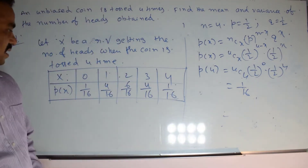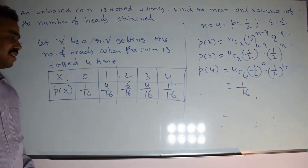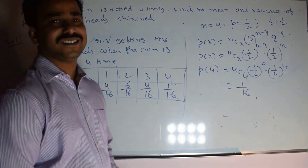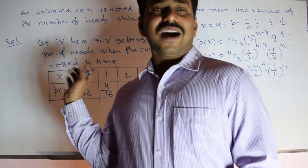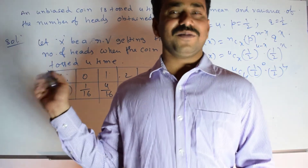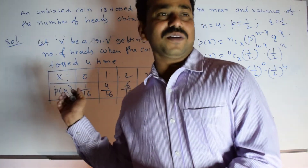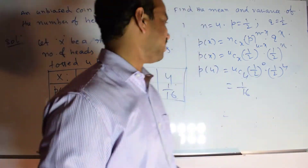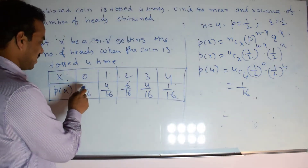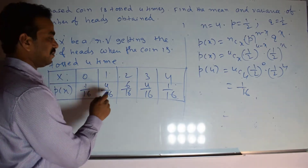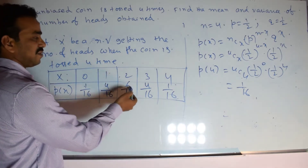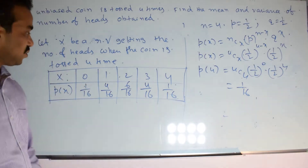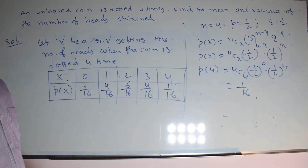If you get doubt whether the values are correct, you can cross-check by calculating the total probability. If you get 1, your probability values are correct; otherwise go back and check. The total probability: (1 + 4 + 6 + 4 + 1)/16 = 16/16 = 1. So the total probability is 1 — our values are correct.